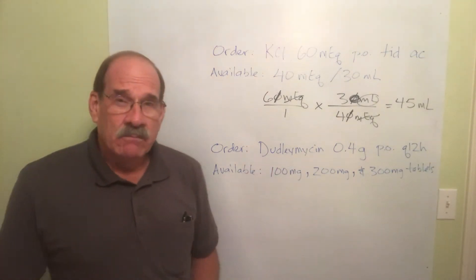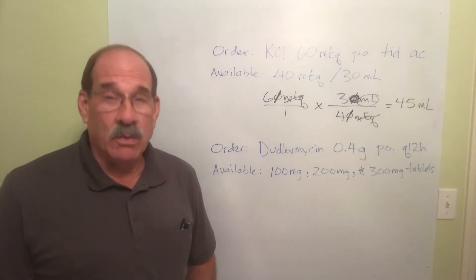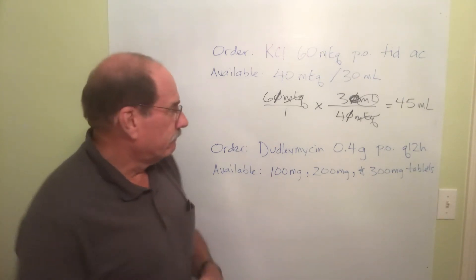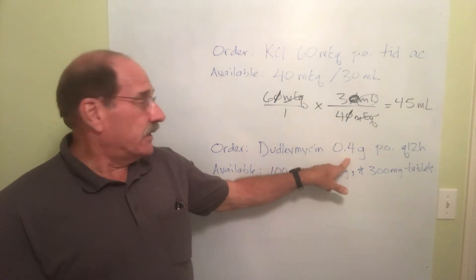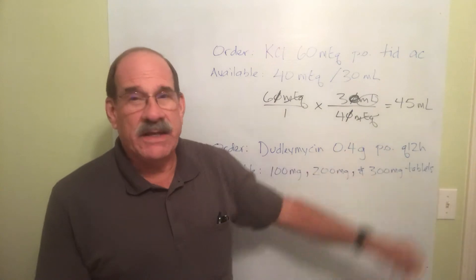Dudleymycin, the most potent antibiotic known to mankind, will kill any germ, every germ ever invented by human beings. So we have, we're supposed to give 0.4 grams by mouth every 12 hours. Can't give that stuff too often, it's dangerous stuff.